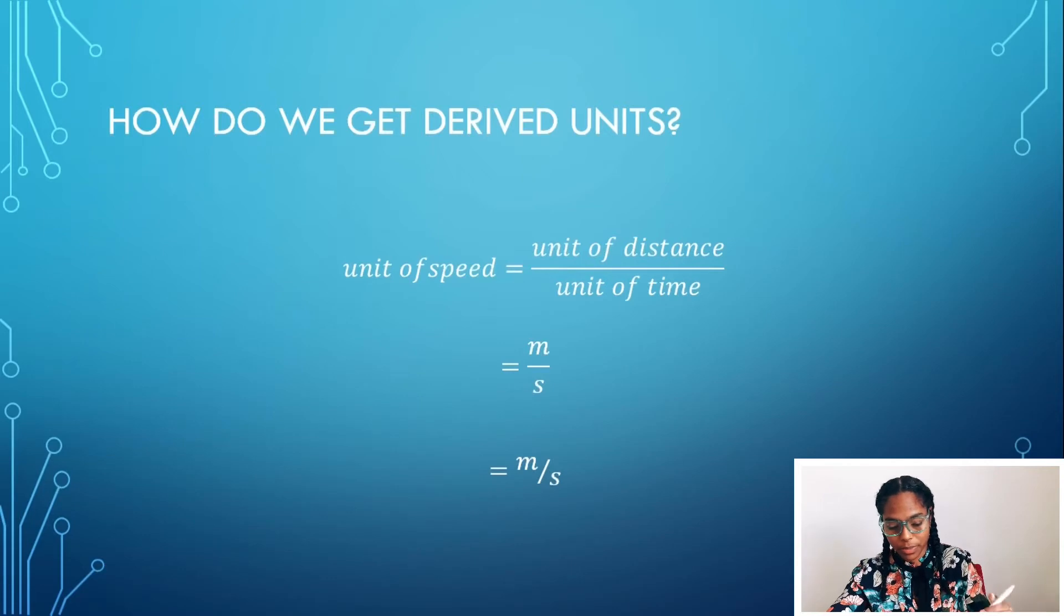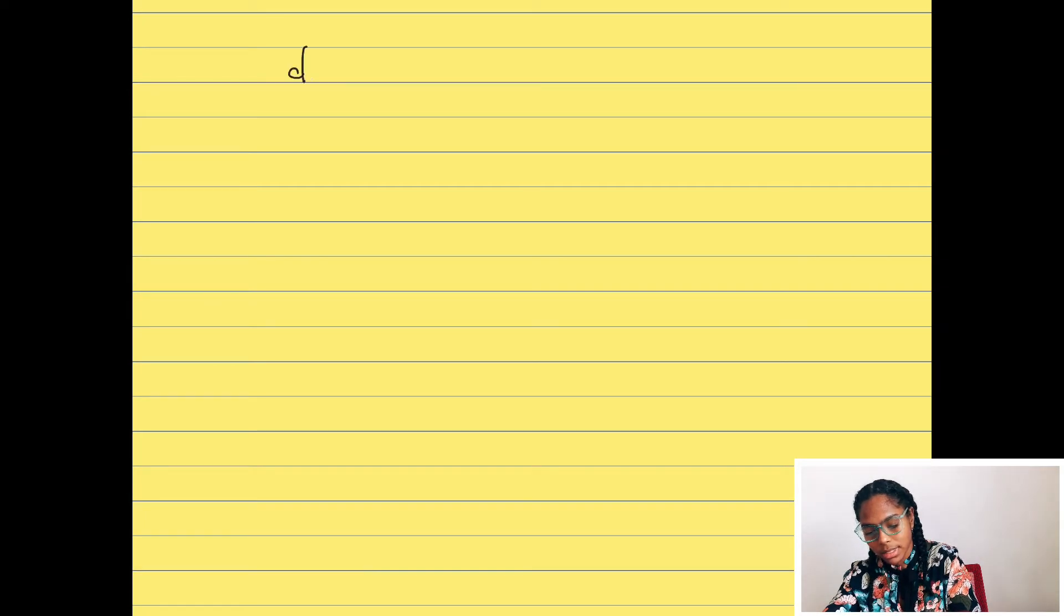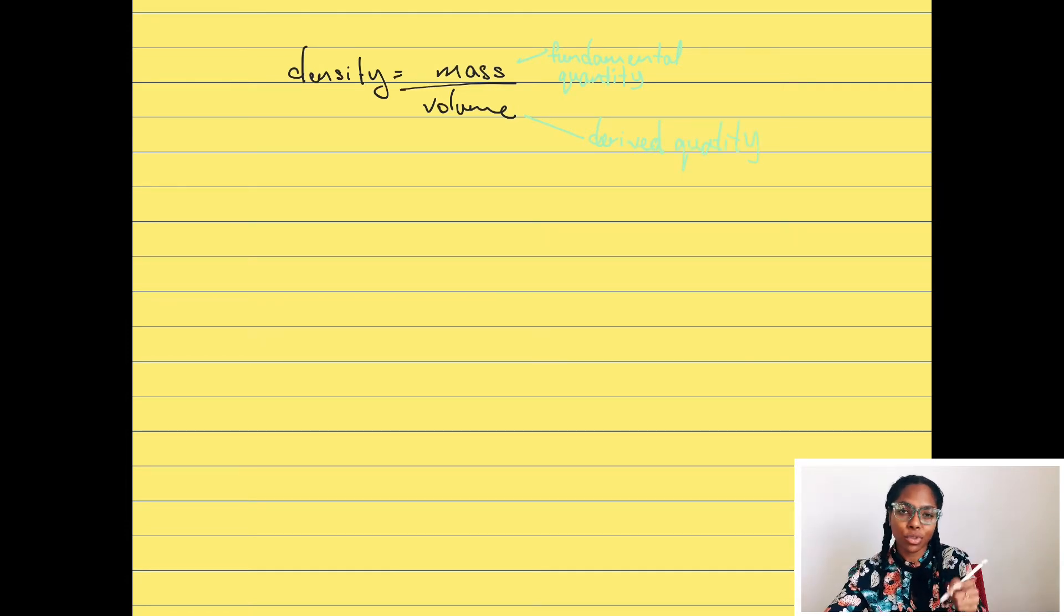Now let's try another example. Let us try density. Density is equal to mass over volume. Mass here is a fundamental quantity, and volume is a derived quantity. Volume is a derived quantity because volume is length by breadth by height, which is side by side by side, which are technically three different values.